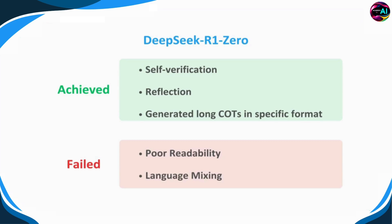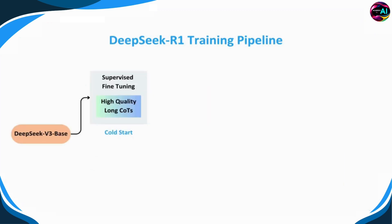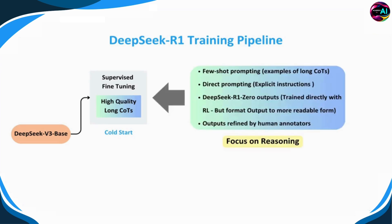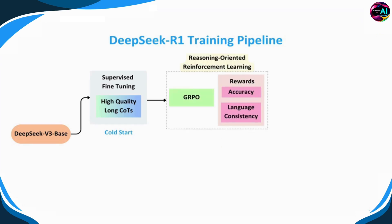To solve the problems encountered, the R1-Zero model pipeline was revised, and it led to the birth of DeepSeek R1. Let's take a look at the DeepSeek R1 training pipeline. DeepSeek R1 is again built on DeepSeek V3 base and is given a cold start with high-quality long chain-of-thought data. This training data comes from multiple sources: few-shot prompting with long chain-of-thought examples, direct prompting with explicit instructions, R1-Zero's outputs refined for readability, and — most specially — human-annotated outputs to ensure clarity. This data is focused on enhancing the model's reasoning ability. After the cold start, DeepSeek R1 is trained using reinforcement learning with GRPO, employing two types of rewards: one based on accuracy of results and the other on language consistency. The language consistency reward is specifically designed to address the language mixing issue observed in R1-Zero.